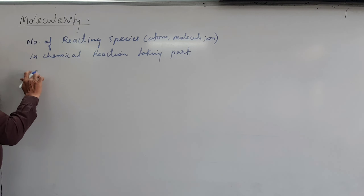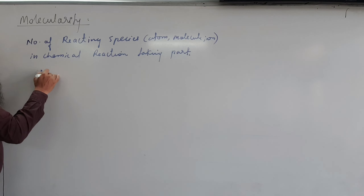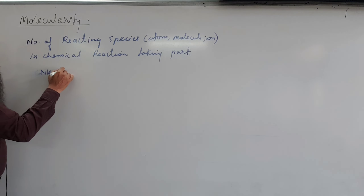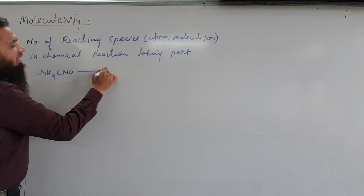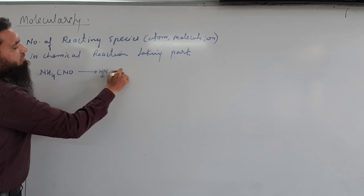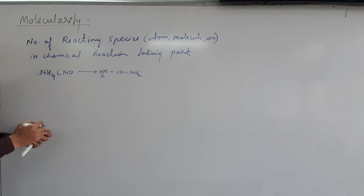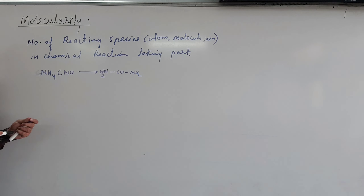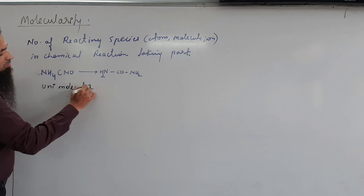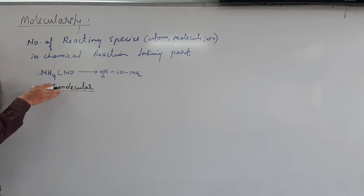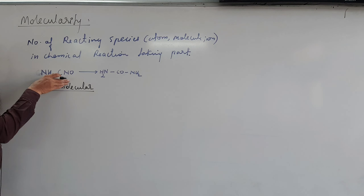For example, ammonium cyanide gives urea — NH2CO NH2. The molecularity of this reaction is one; it is a unimolecular reaction, because only one type of molecule is taking part in the chemical reaction.